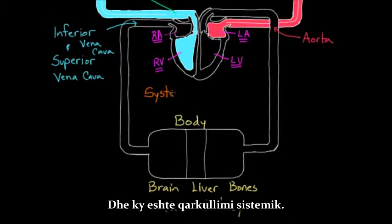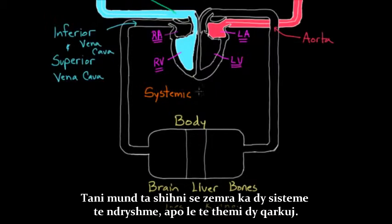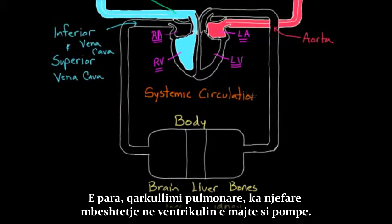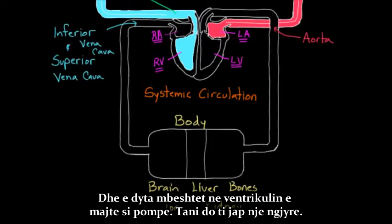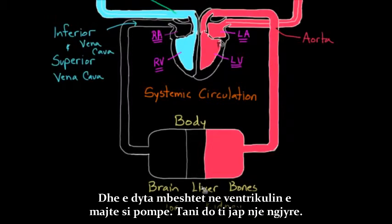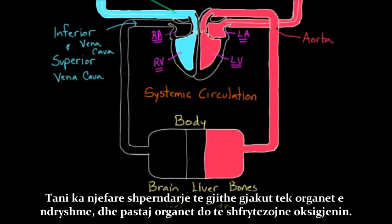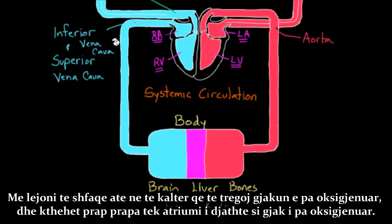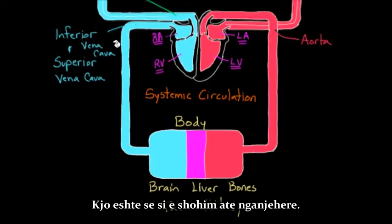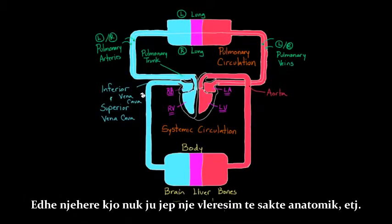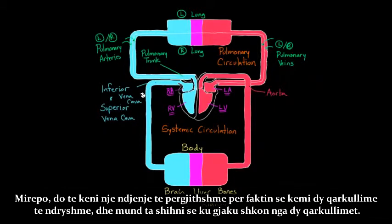This is the systemic circulation. So the heart really has two different circuits: the pulmonary circulation, which relies on the right ventricle as the pump, and the systemic circulation, which relies on the left ventricle as the pump. Blood is delivered oxygenated to the various organs, the organs use up the oxygen, and then it returns as deoxygenated blood back to the right atrium. You get an overall feel for the two different circulations and where blood is going in each circuit.